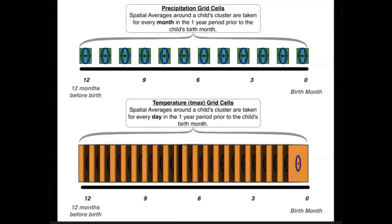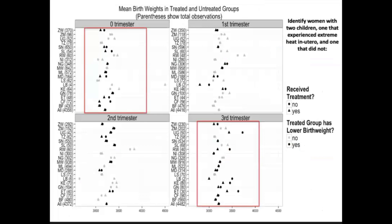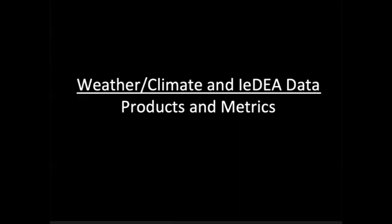This can allow us to do pseudo-natural experiments. In this case, we filtered our data and looked for women that had exactly two children — one that experienced extreme heat in utero during one of the terms and one that did not — and simply compared their birth weights. Anywhere highlighted in black is where the child that received the in utero heat treatment ended up having a lower birth weight than his sibling. This is just to give you an idea of what we can do.